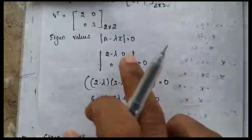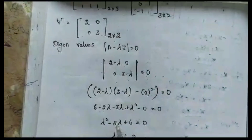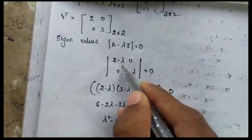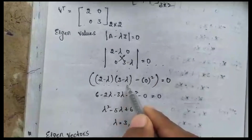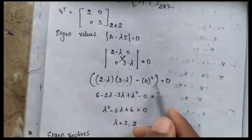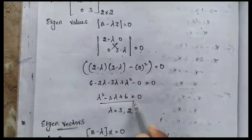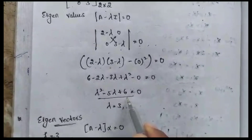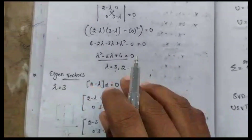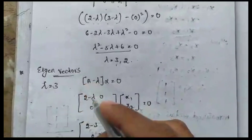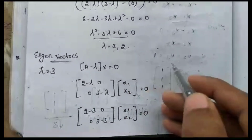The eigenvalue equation for the 2×2 Vᵀ matrix is: |2−λ, 0; 0, 3−λ| = 0. Taking the determinant gives (2−λ)(3−λ) − 0 = 0, a degree-2 polynomial. Substituting into Casio, we get the lambda values λ = 3 and λ = 2.